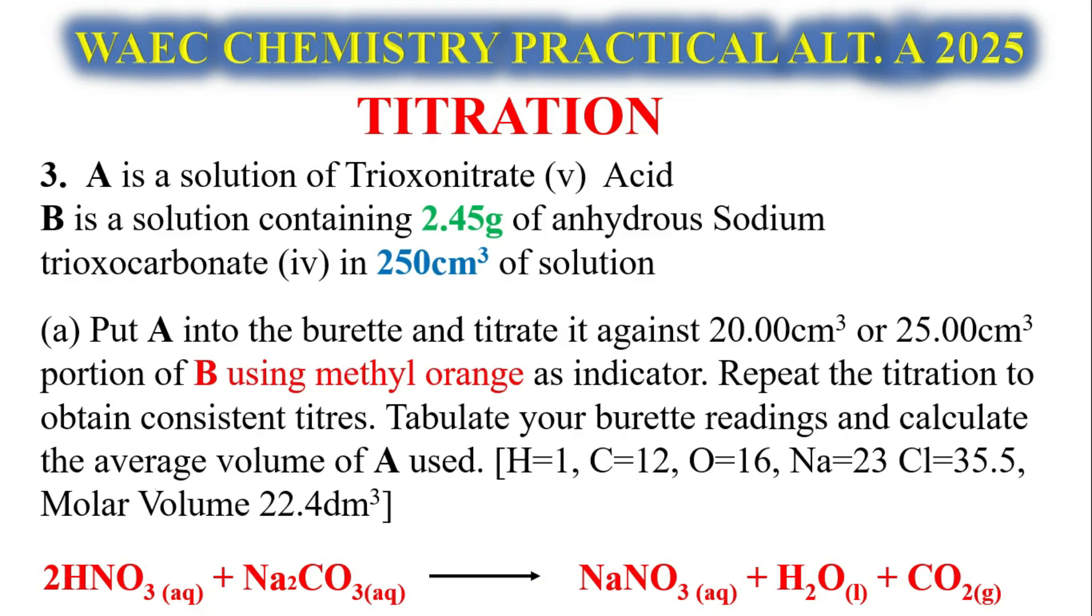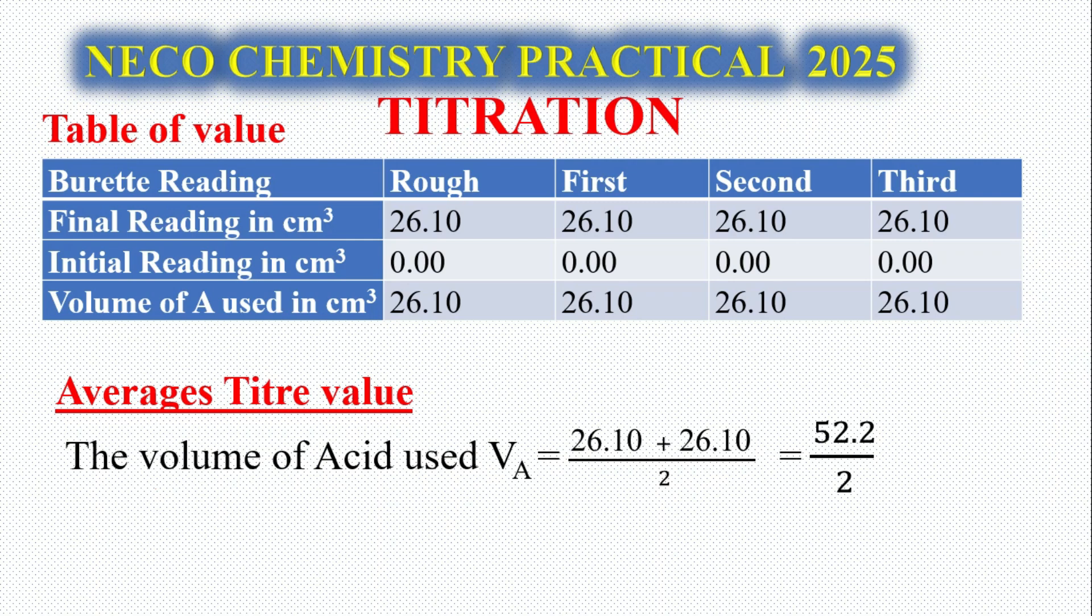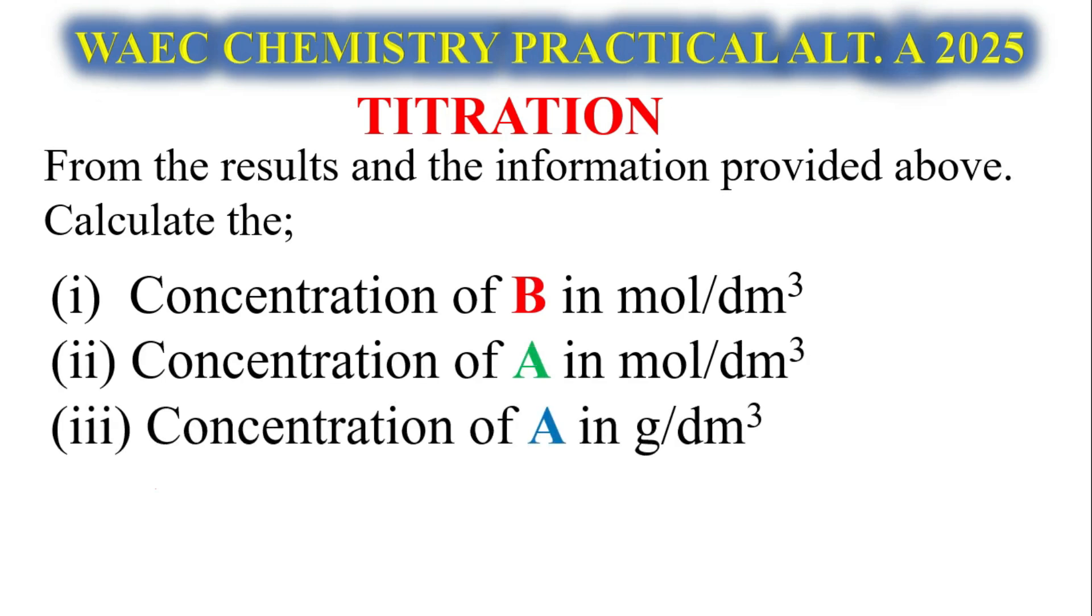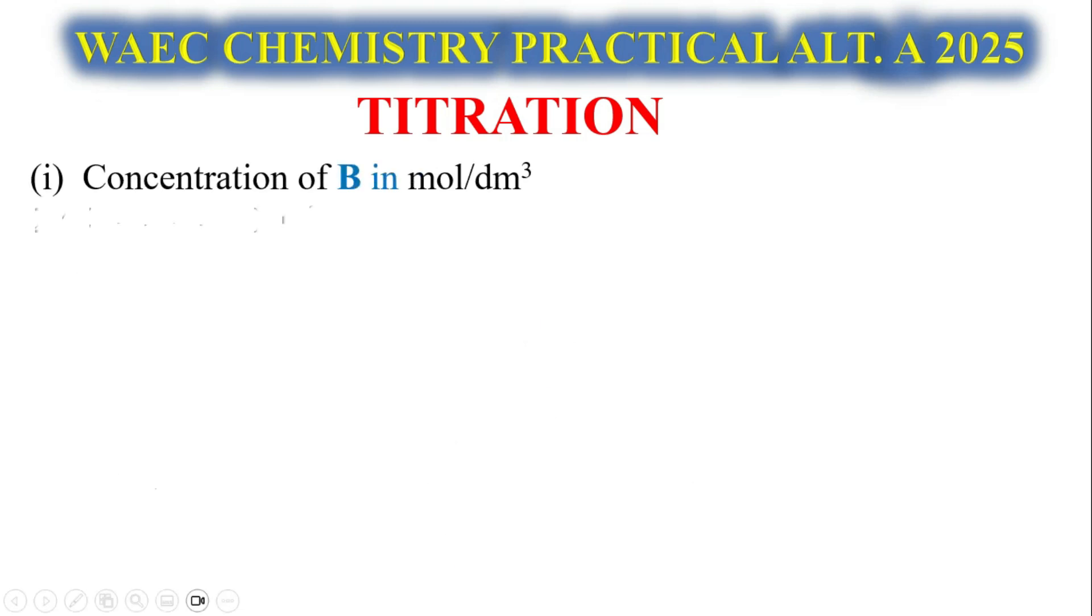Question number 3: Here is a solution of trioxonitrate five acid. YB is a solution containing 2.45 grams of anhydrous sodium trioxocarbonate four in 250 cm³ of solution. Put it into the burette and titrate it against 25 cm³ using the same table of values. Our titre value would be 26.10. Let's look at the questions expected: calculate the concentration of B in mol per dm³, calculate the concentration of A in mol per dm³, and the volume of gas evolved in the reaction at STP.